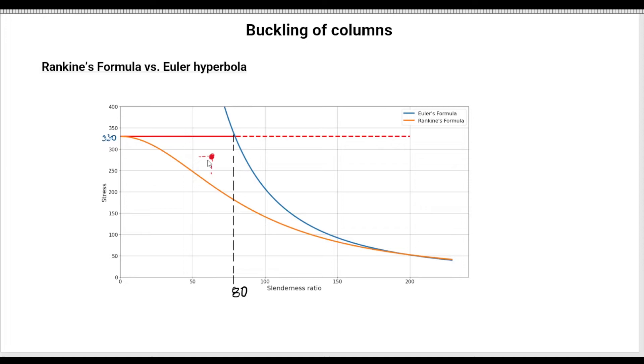For example, if you have a case where the slenderness is this one here, and the stress applied to the load is this one here, if you used Euler's formula, it would say this is an intermediate column. It's below the limit here. So there's still some room to go to the critical load here, which implies that there exists a safety factor here, which means I could use the column.